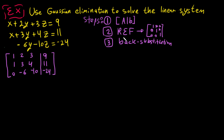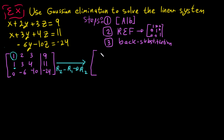To get REF, we have a leading 1 in row 1, so we need to make the entry below it zero. We subtract row 1 from row 2: R2 minus R1 into R2. The first row stays the same. The new R2 becomes: 0, 1, 1 | 2.